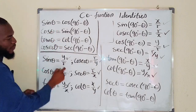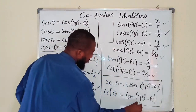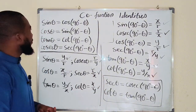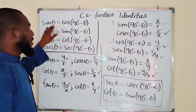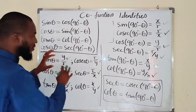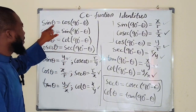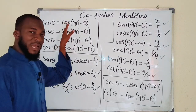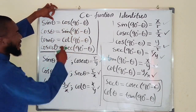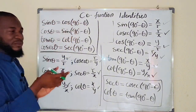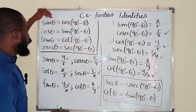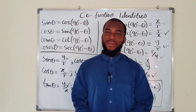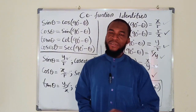Let me box all six identities for you to see. These are what we call co-function identities, and they are very important. Sometimes you may be given an expression in terms of sine and want to transform it in terms of cosine — just use this relationship. Once you recognize that the sum of two angles equals 90 degrees, you can equate them using these identities. Thank you for watching. Do share with your learning colleagues and don't forget to subscribe to my YouTube channel for more exciting videos. Bye bye!